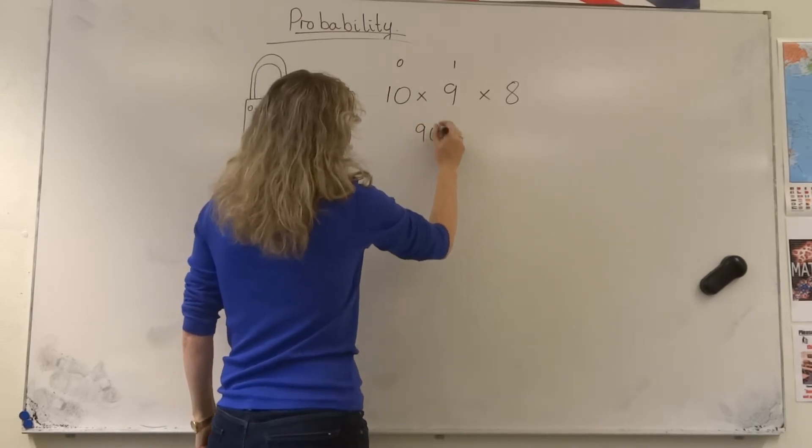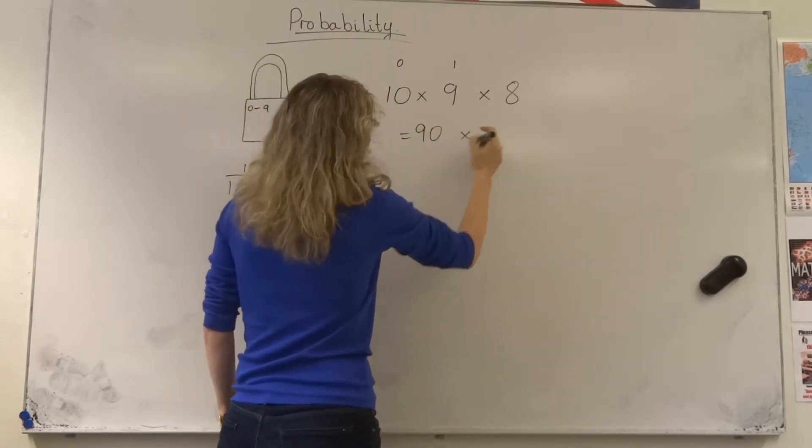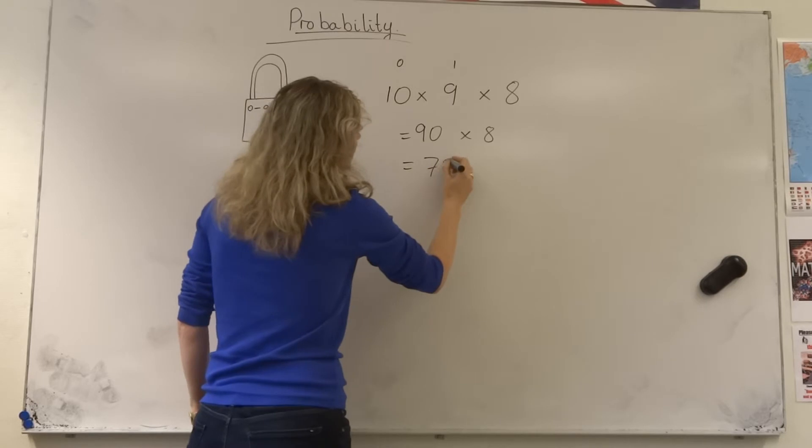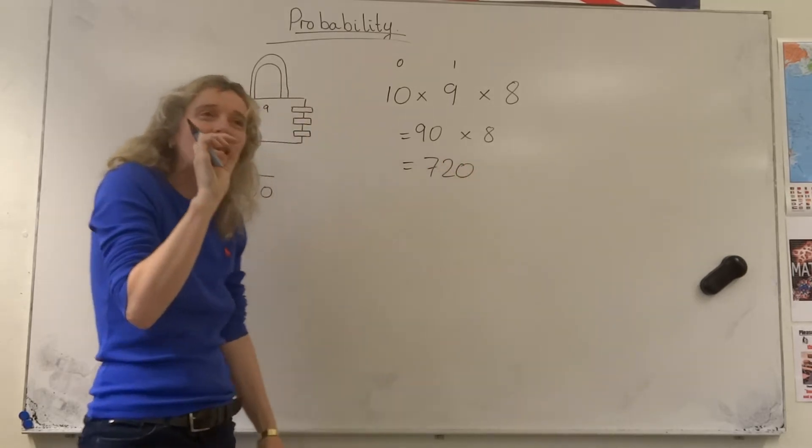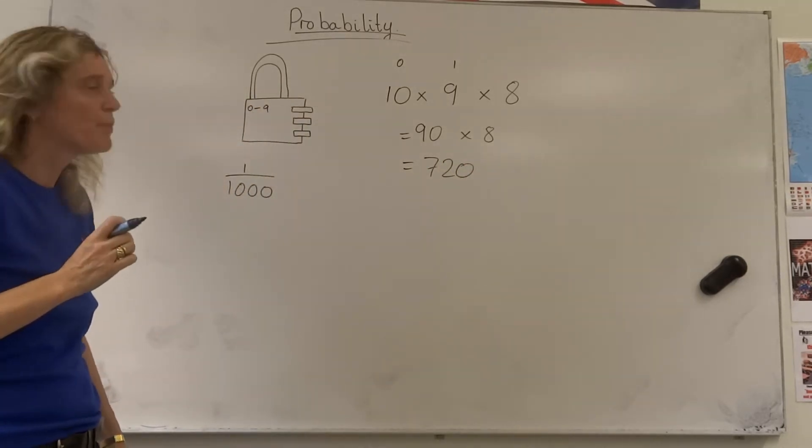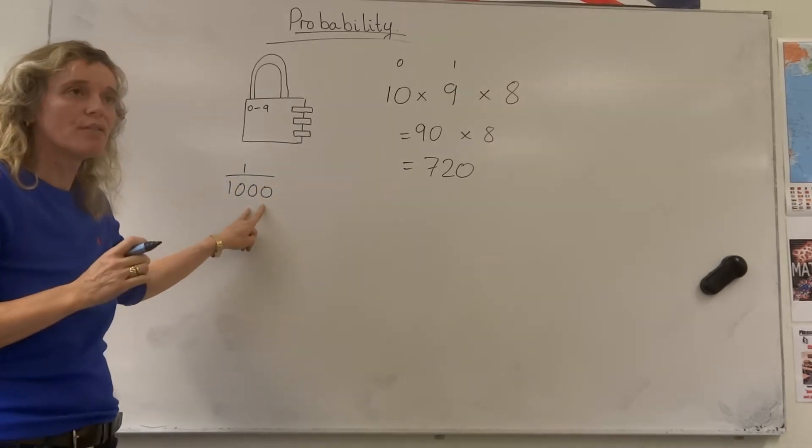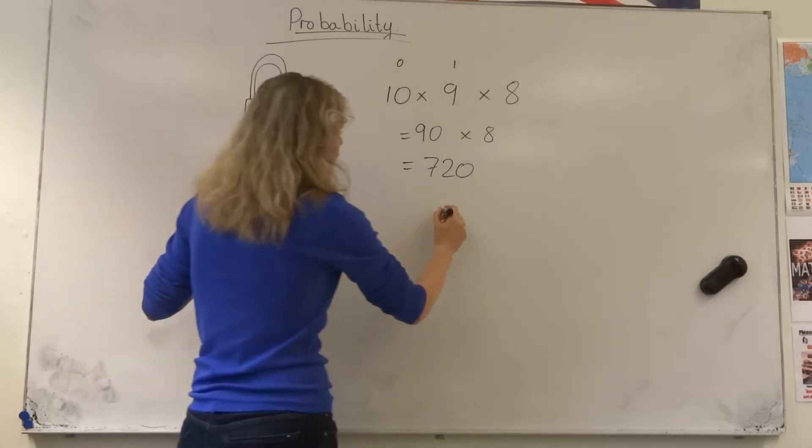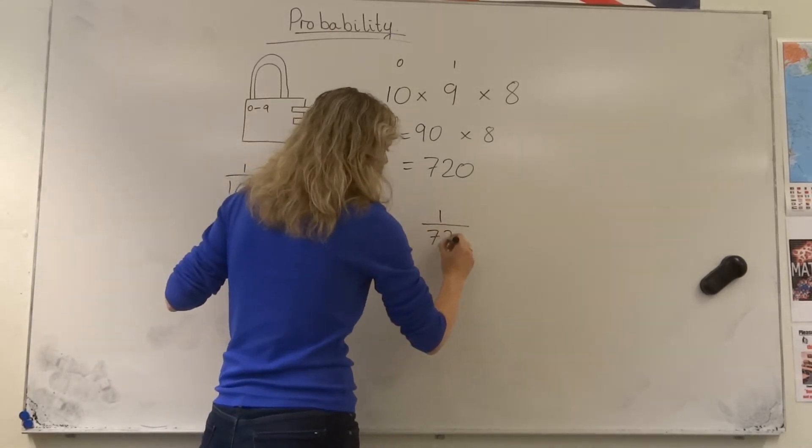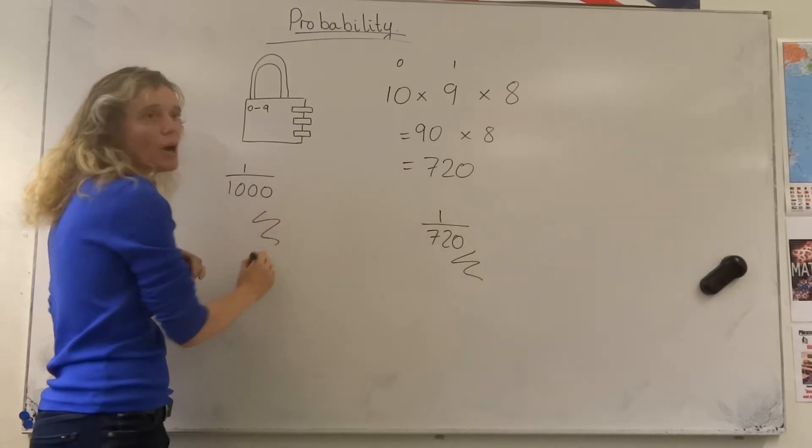10 nines are 90 times 8. 8 nines are 72. Just doing that little adjustment that you're not allowed to repeat a number gives me instead of a chance of 1 in 1,000 of getting the code right, I have a chance of 1 in 720 of getting the code right.